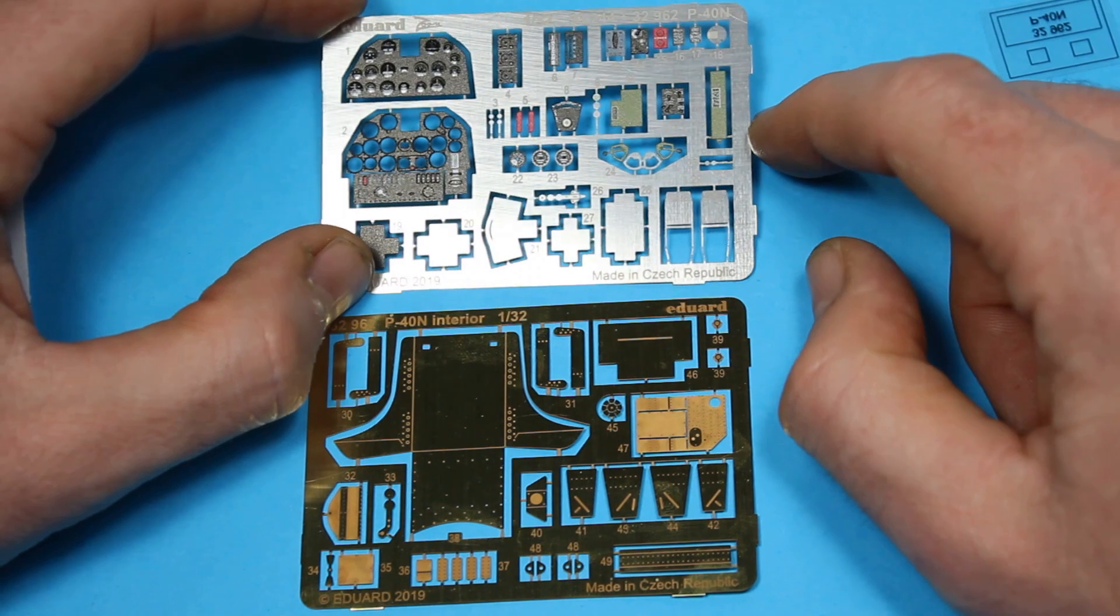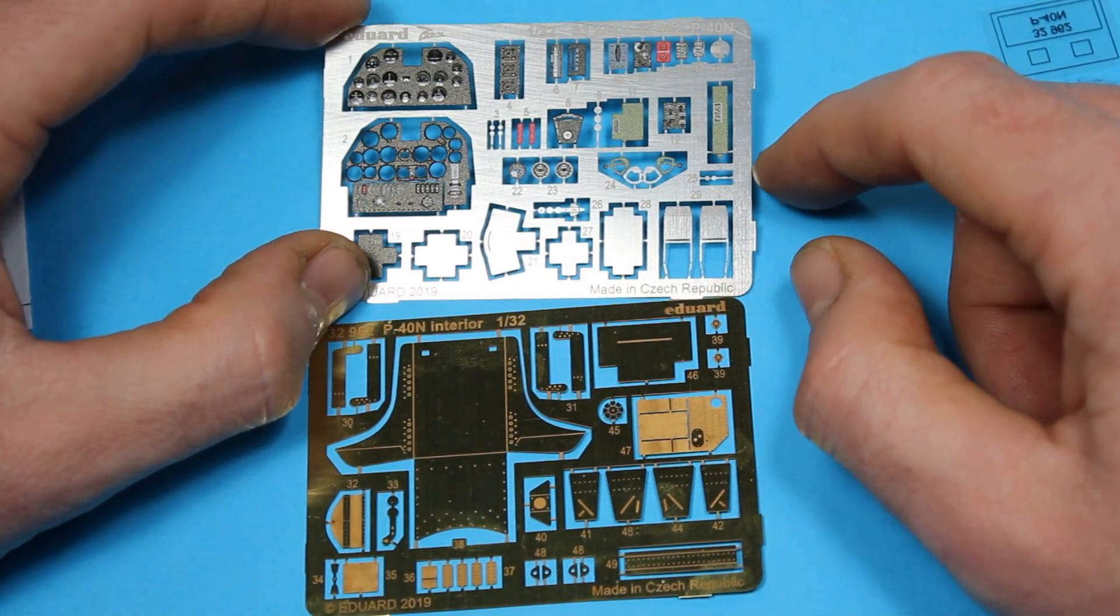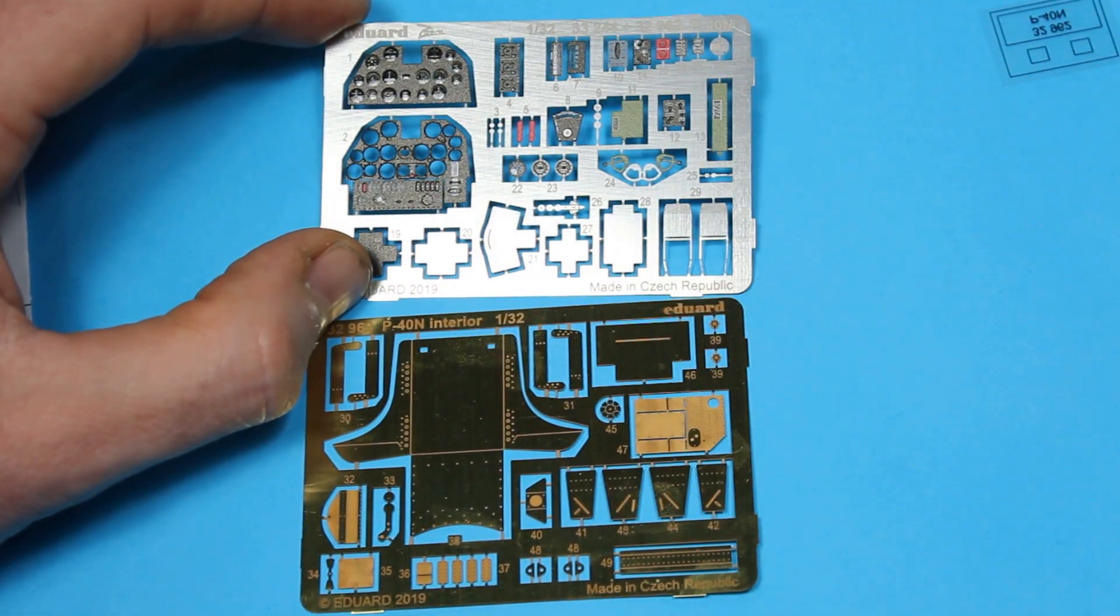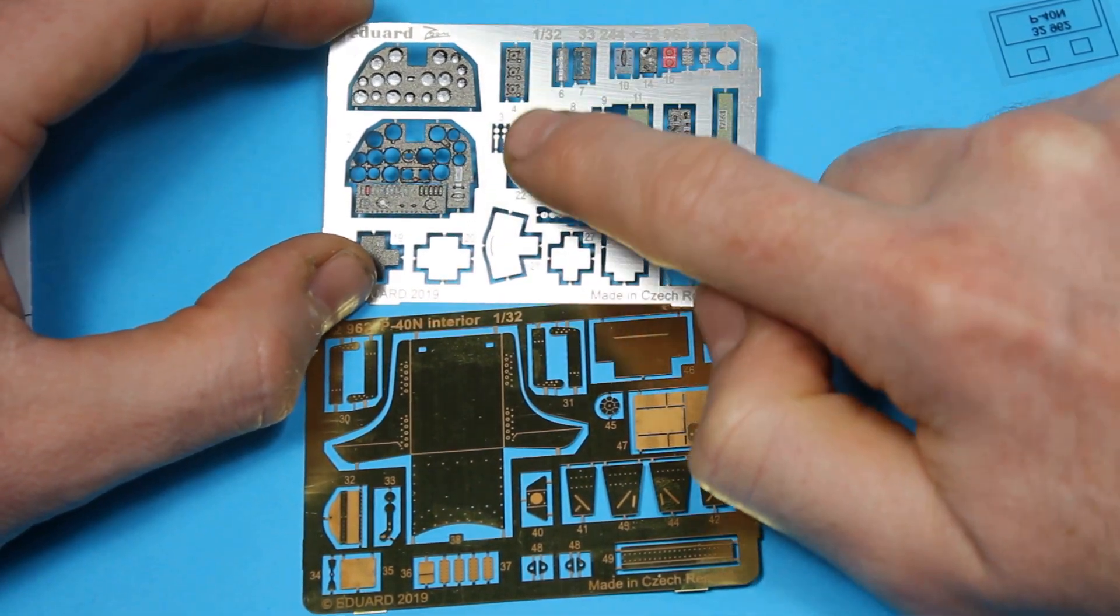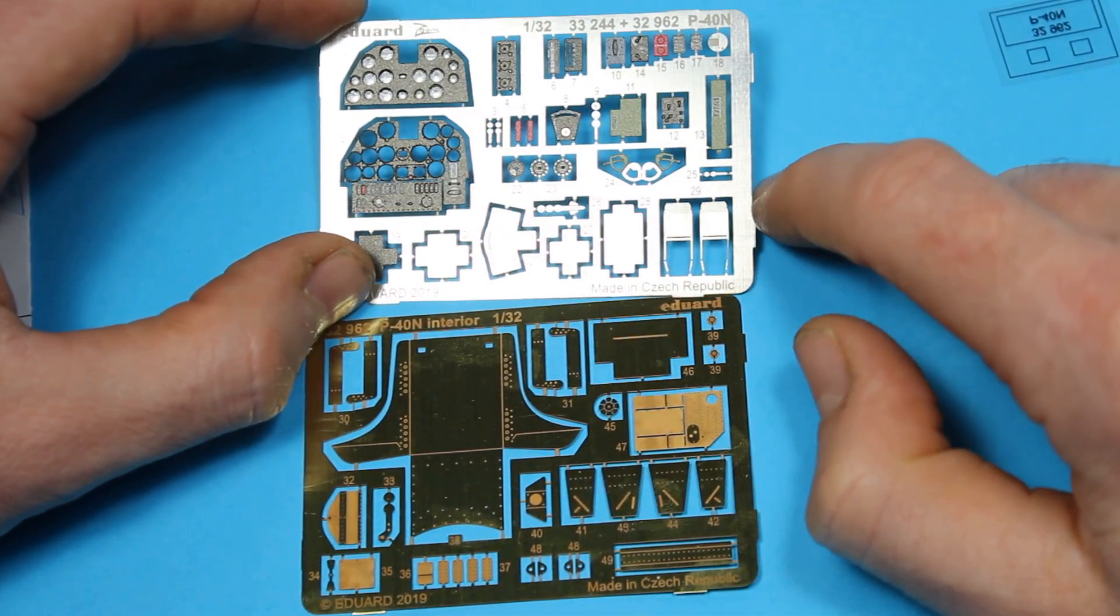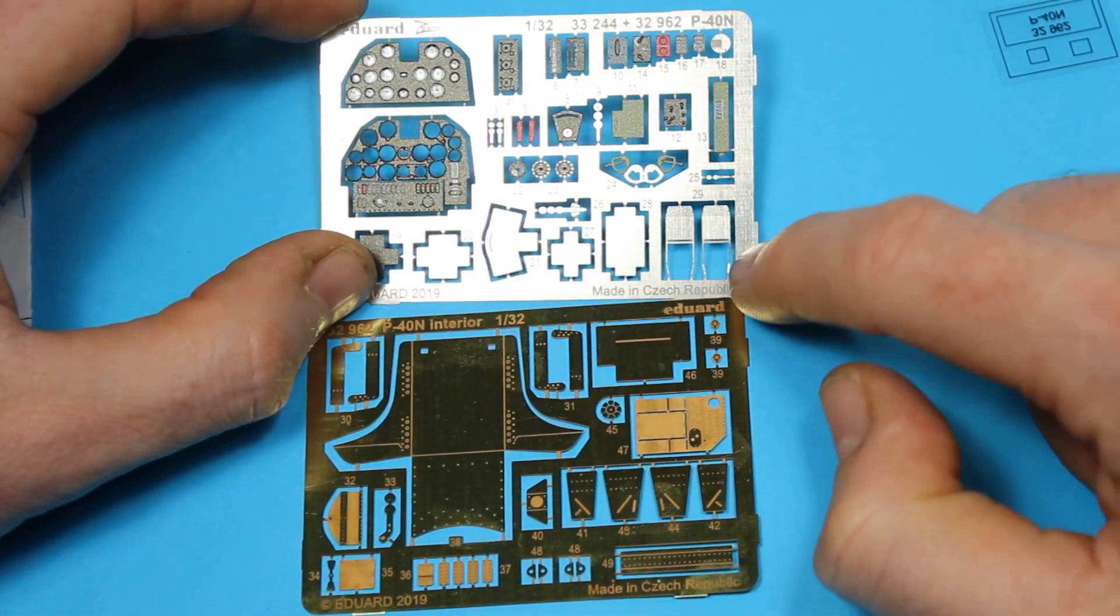You've got the pre-painted section - I don't really rate Eduard's pre-painted bits at all. The instrument panel's alright and you can get away with that, but most of this green stuff doesn't look very good and even the black has quite a rough texture to it.